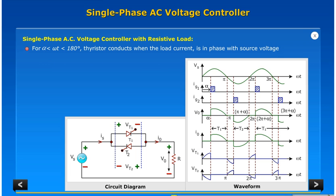For alpha less than omega t less than 180 degrees, thyristor conducts when the load current is in phase with source voltage.